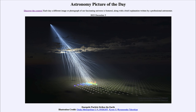Today's picture for December 5th of 2023 is titled Energetic Particle Strikes the Earth. This shows a cosmic ray particle coming from the upper left side and striking Earth's atmosphere. When a cosmic ray does this, it will cause a great shower of particles, as you can see, coming down to Earth.